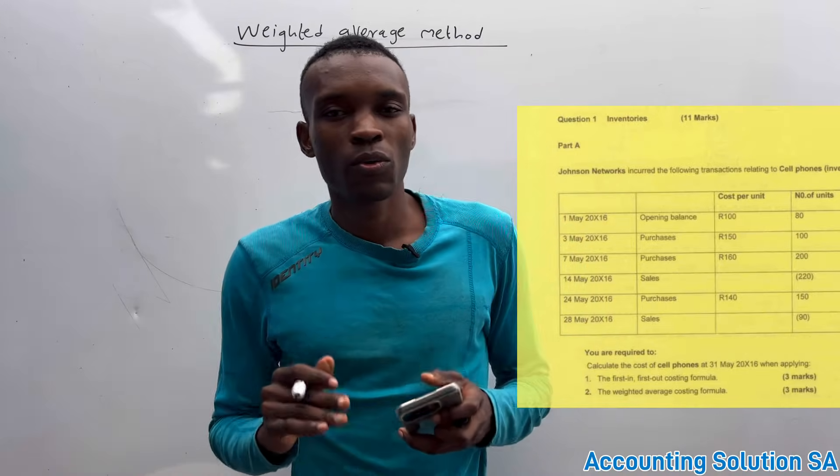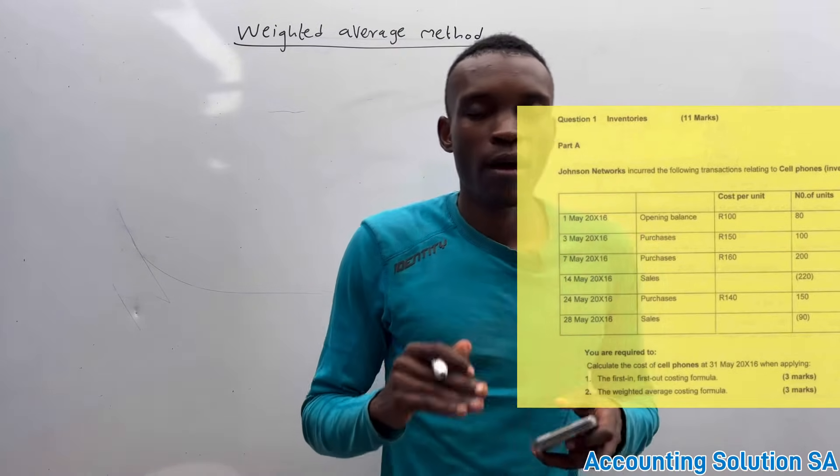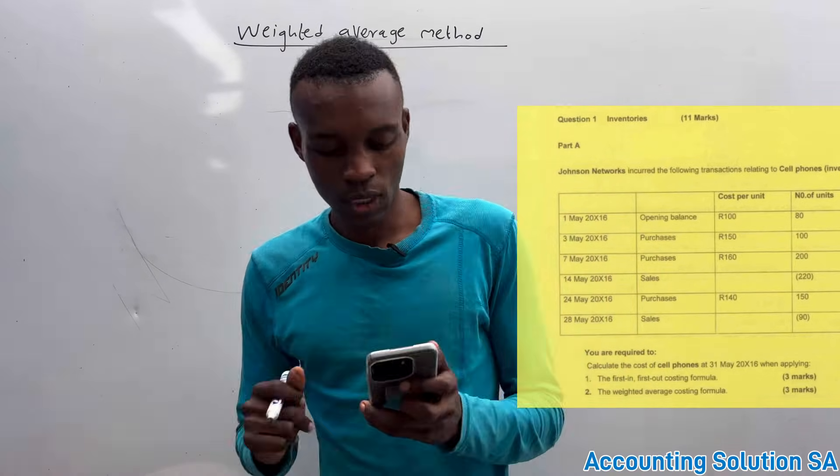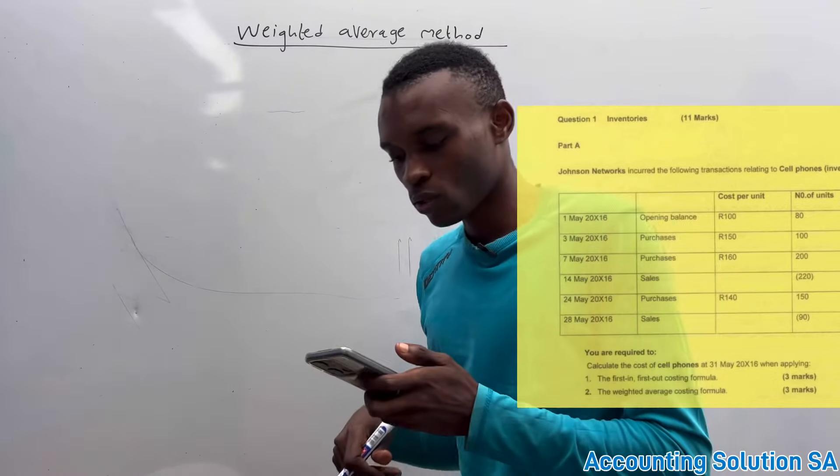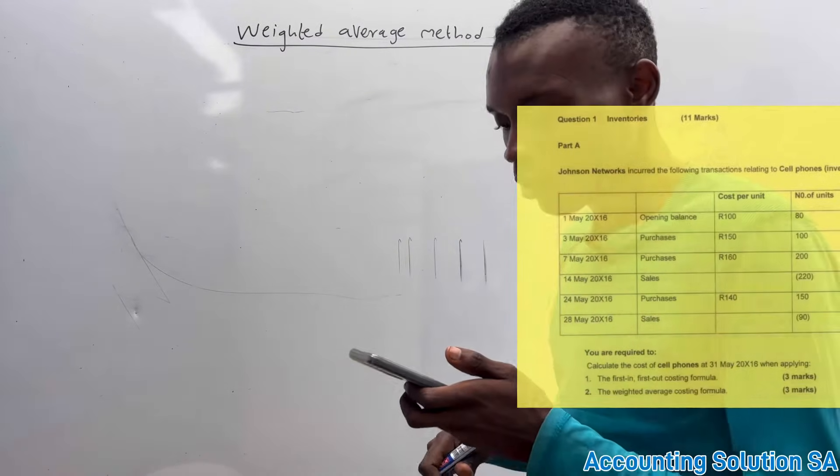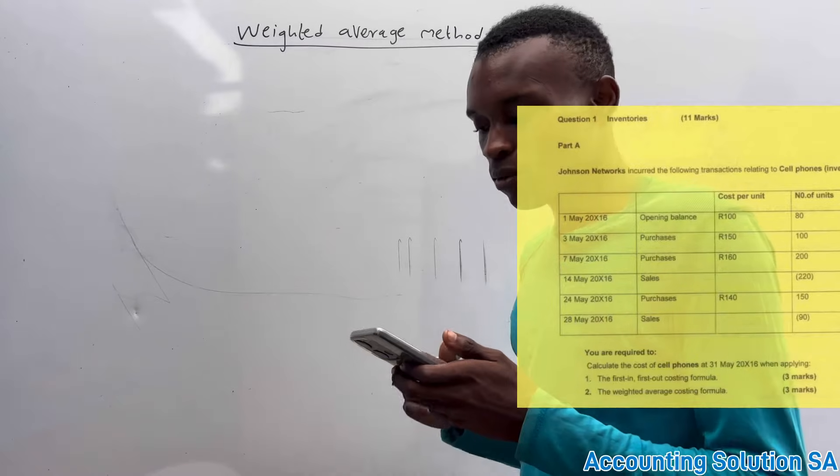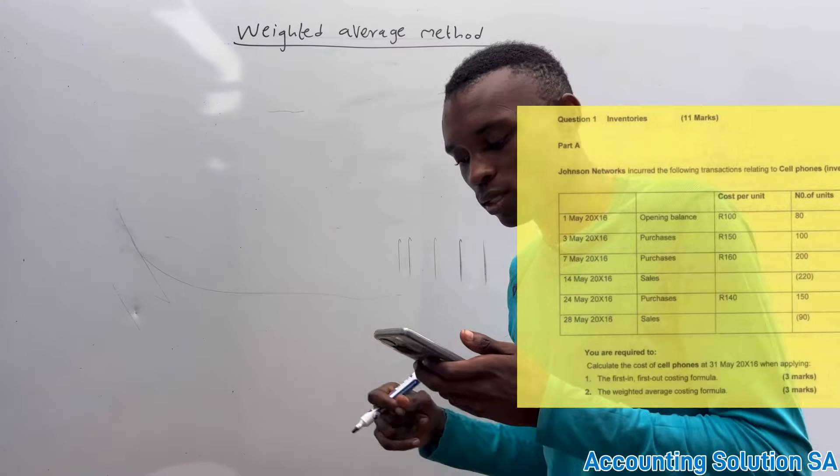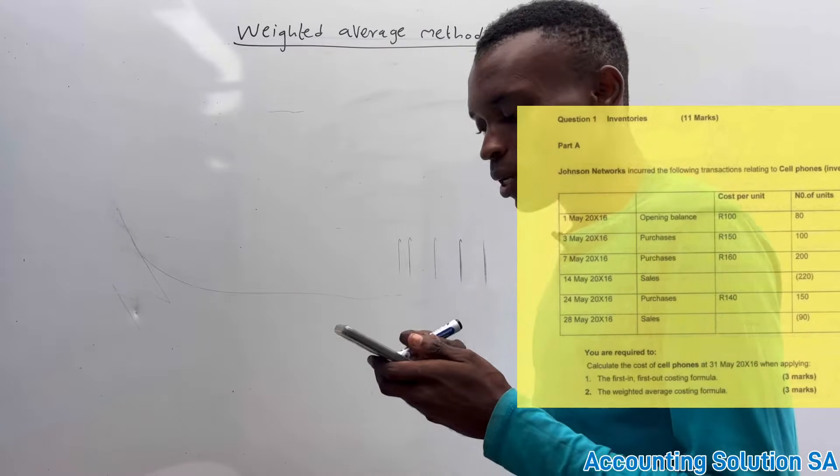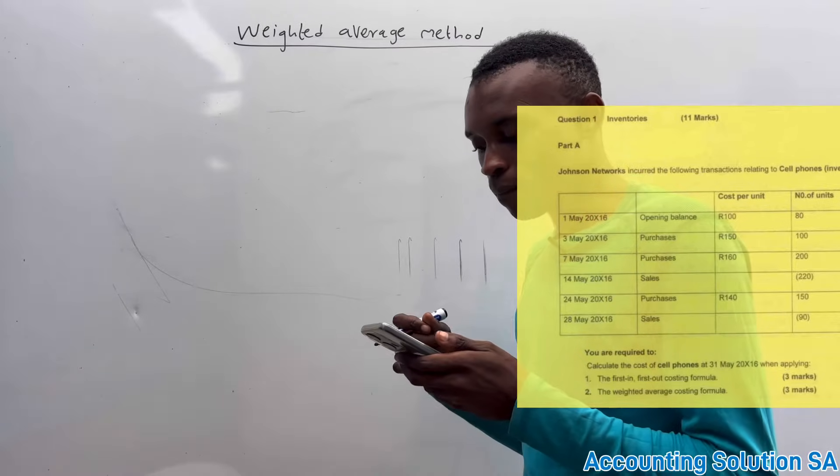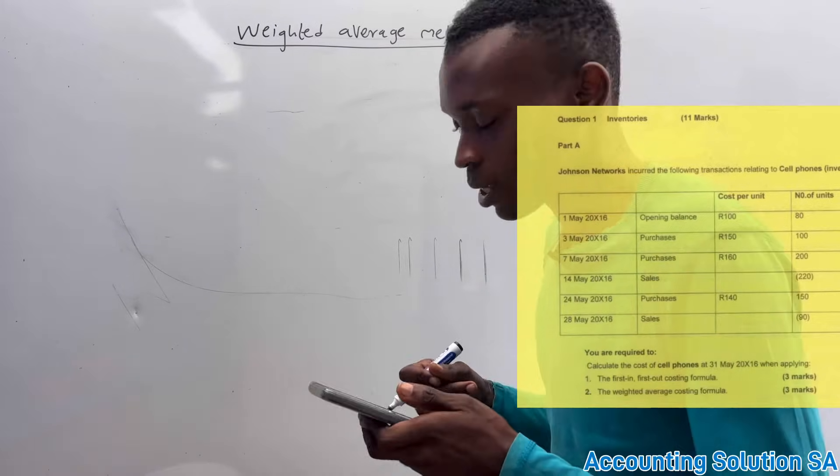In this video, we are going to calculate a weighted average method. Let's check the question paper that we have. On the question paper, they give us a table that has cost price per unit, number of units, as well as the date and opening balance until the last sale.